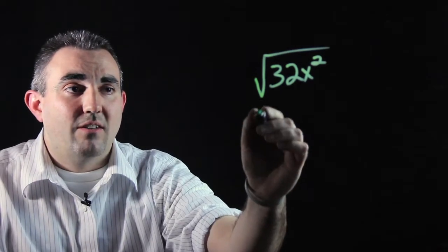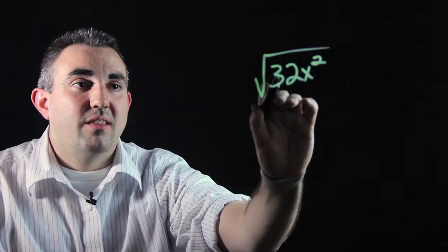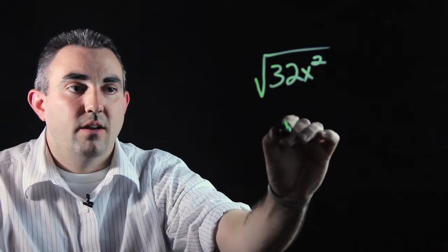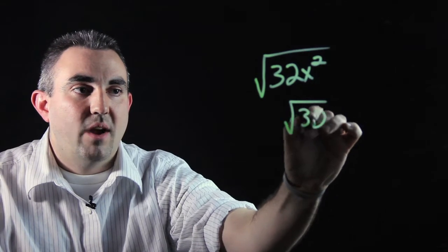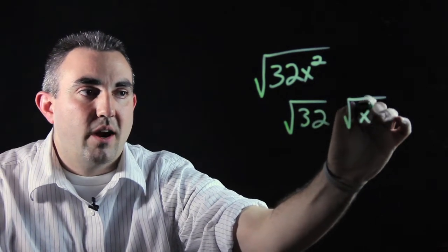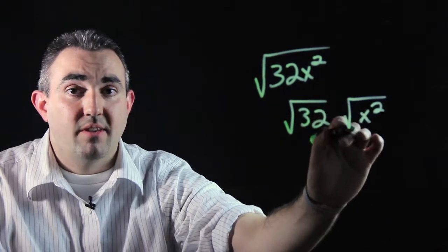So by using the radical sign, we're going to split this up into the number portion and the letter portion. So we're going to split the 32 away from the x squared, which is a perfect square. x times x gives you x squared.